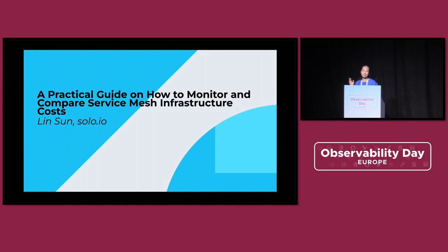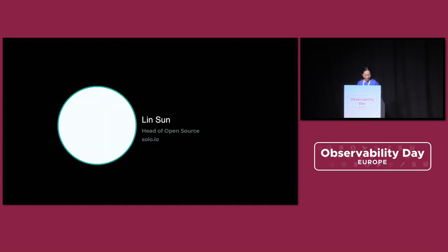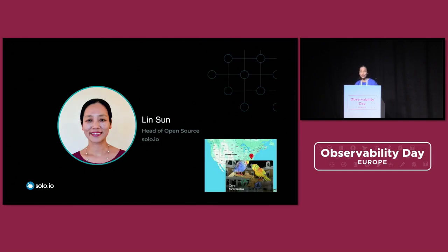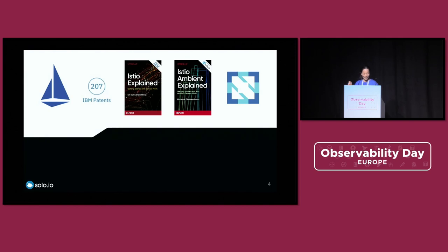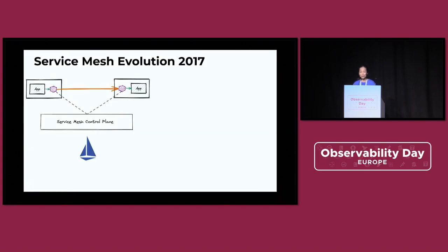Let's jump in, because I only have five minutes. This is my first time speaking on Observability Day. My name is Lin Sang. I come from Cary, North Carolina — it's a very small town, so I loaded a map on there. I work at Solo; I'm the head of open source at Solo.io. Before I joined Solo, I worked at IBM, and on my last day I took a screenshot of our corporate directory — I helped contribute to 207 patents to IBM. I wrote two books about Istio: Istio Explained and Istio Ambient Explained. I'm also a CNCF ambassador and one of the newest CNCF TOC members. I want to start by talking about service mesh before we jump into observing the cost of service mesh.